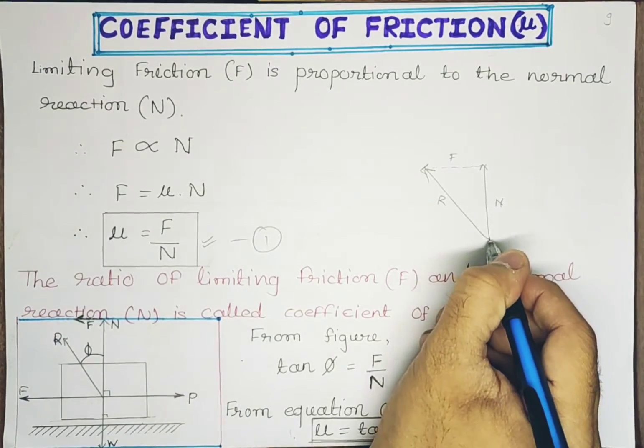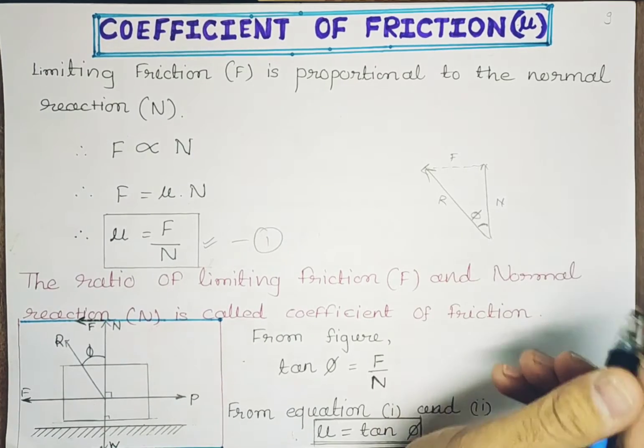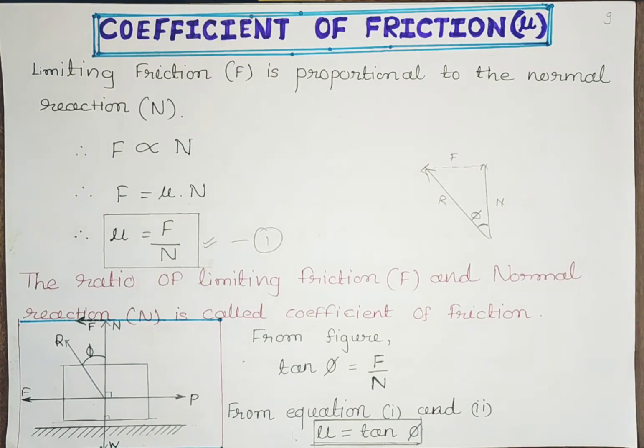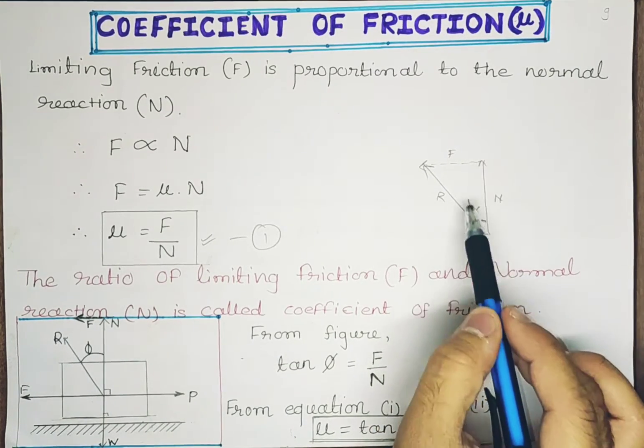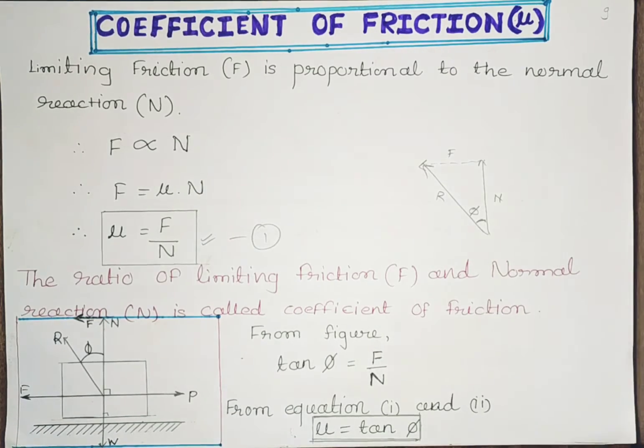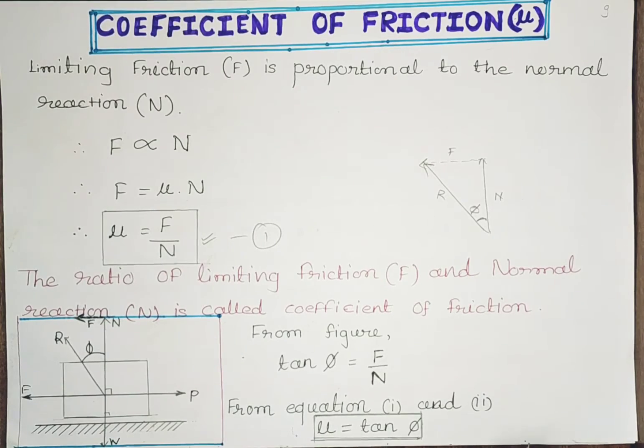Here we have an angle φ, the angle of friction from our previous lecture. We would say tan φ = F/N, that is tan φ equals opposite side upon adjacent side. From equation one, F/N is μ, so μ = tan φ. This becomes our alternate formula for coefficient of friction.